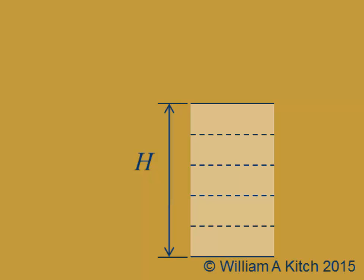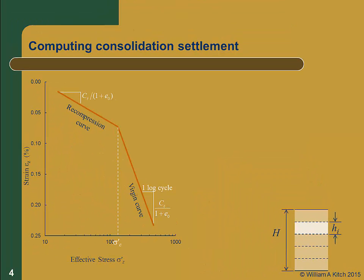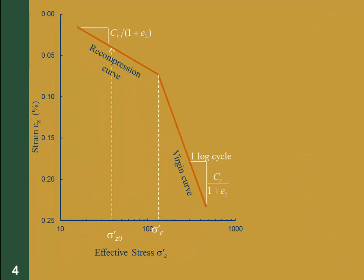Let's look in more detail at the consolidation of a single sub-layer — the ith layer with thickness h sub i. Before starting the computations, we must have the consolidation curve for the soil stratum. We'll know C sub C over 1 plus e0, C sub R over 1 plus e0, and the pre-consolidation stress sigma prime c. For this example, we'll assume our soil is over-consolidated. For the ith sub-layer, we calculate the initial vertical effective stress sigma prime z0, and from the consolidation curve we can determine epsilon 0. Knowing the change in vertical effective stress delta sigma z, we can determine the final effective stress sigma prime zf and the associated strain epsilon f. The total strain for the sub-layer will be epsilon sub i.